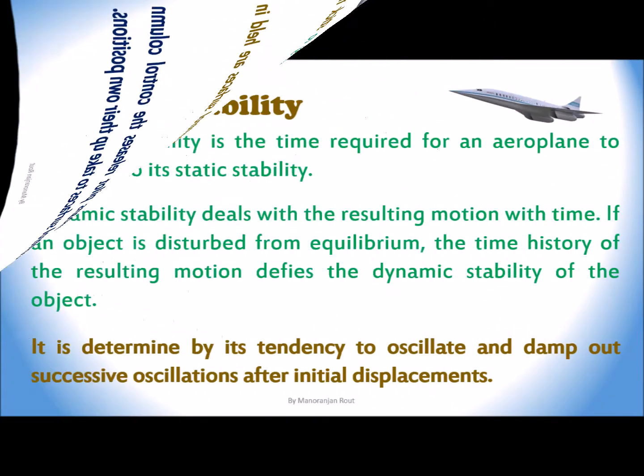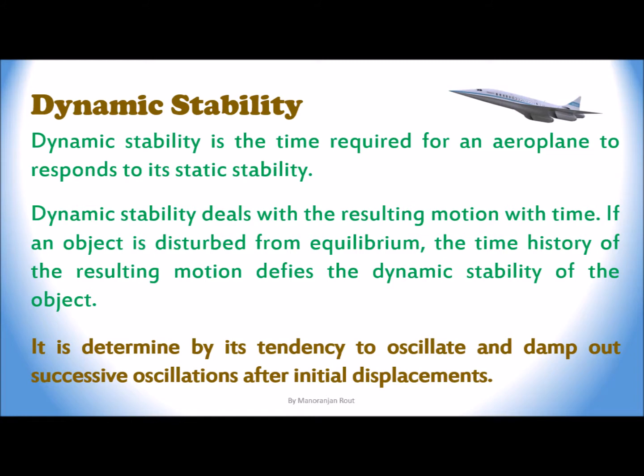Dynamic stability is the time required for an aeroplane to respond to its static stability. Dynamic stability deals with the resulting motion over time. If an object is disturbed from equilibrium, the time history of the resulting motion defines the dynamic stability of the object. It is determined by its tendency to oscillate and damp out successive oscillations after initial displacement.